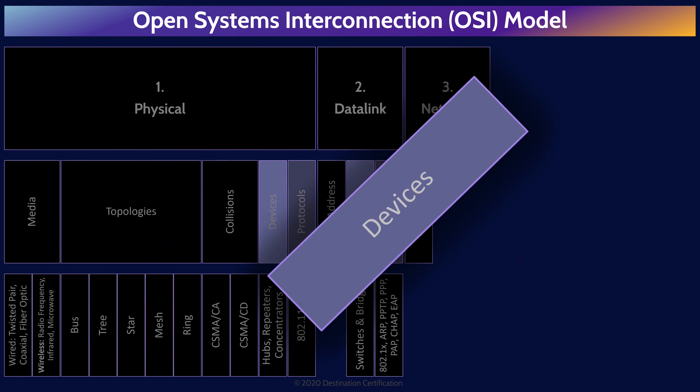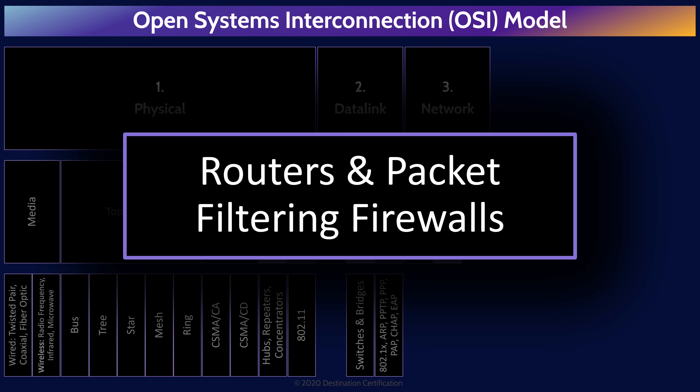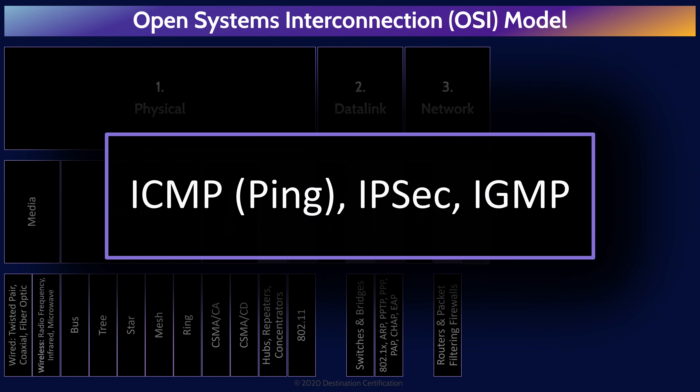Layer 3 devices you should know about are routers and packet filtering firewalls. Routers forward packets between different network segments based on IP addresses. Packet filtering firewalls are the simplest and fastest firewalls. The Layer 3 protocols: ICMP, Internet Control Message Protocol, allows network devices to send error and control messages and enables the ping and traceroute utilities. IPsec, Internet Protocol Security, is the suite of protocols providing data authentication, integrity, and confidentiality. And IGMP, Internet Group Management Protocol, is used by hosts and adjacent routers to establish multicast group memberships, enabling transmission of the same packets to multiple systems at once.